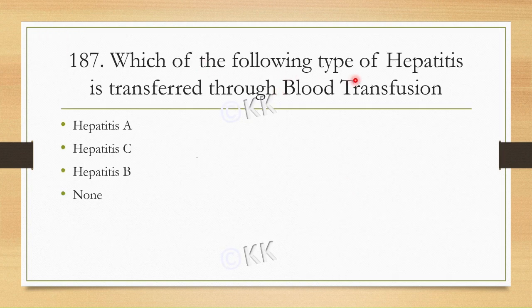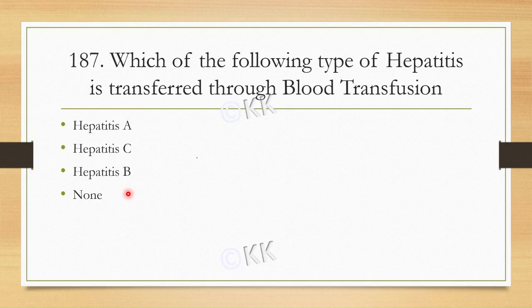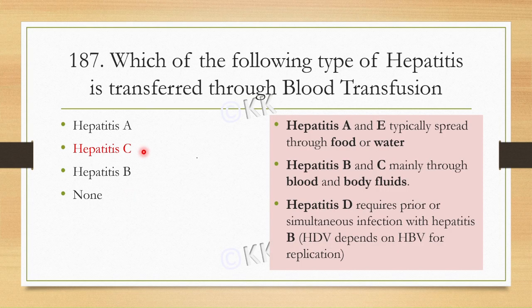Let's look at our next question. Which of the following types of hepatitis is transferred through blood transfusion? Option A: Hepatitis A. Option B: Hepatitis C. Option C: Hepatitis B. Option D: None. The correct option is Hepatitis C.